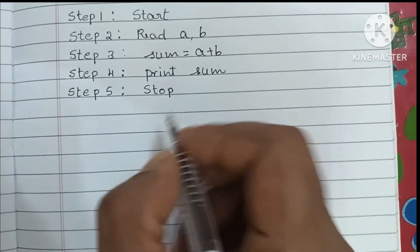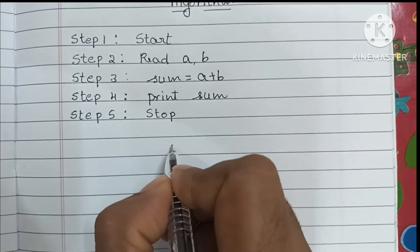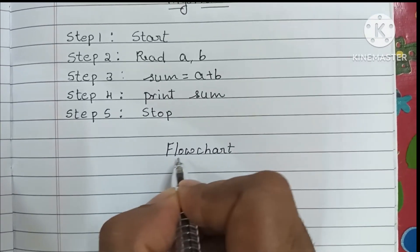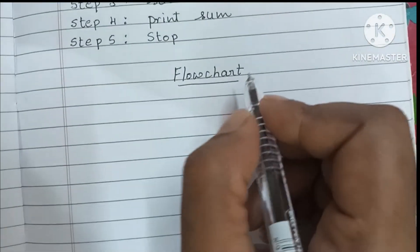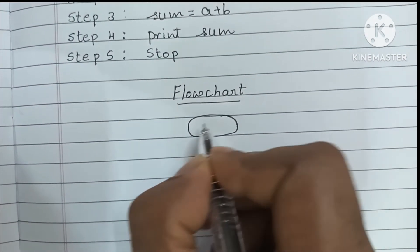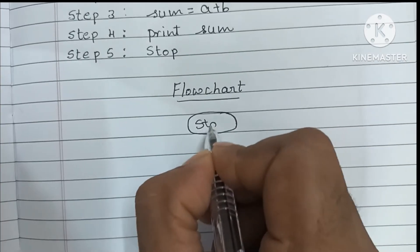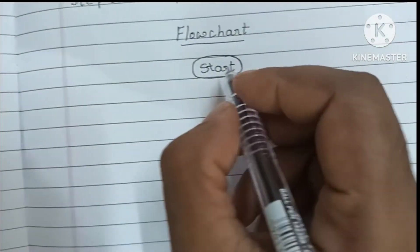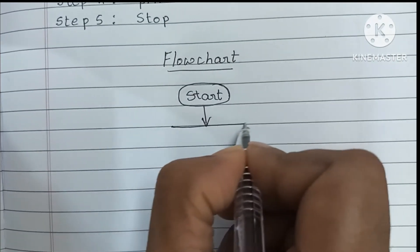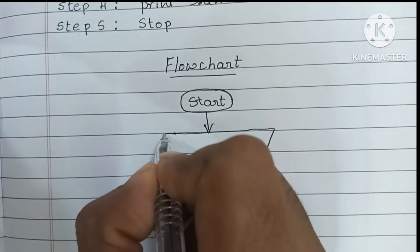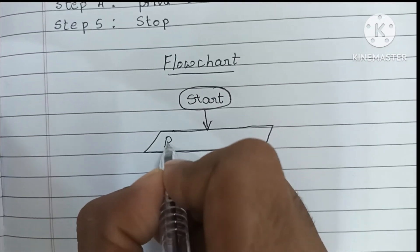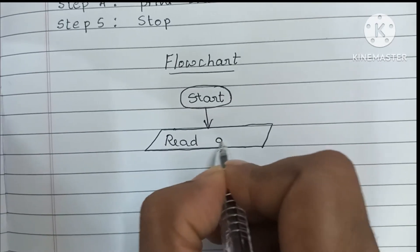Next we have to draw the flowchart. A flowchart is a graphical representation of an algorithm. It also starts with the start statement, written within an oval shape. Next we draw a parallelogram to read the input variables — input and output variables are always written within a parallelogram shape — and within that we write: read a, b.